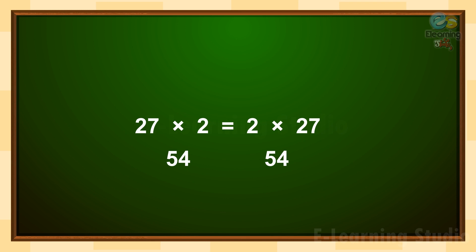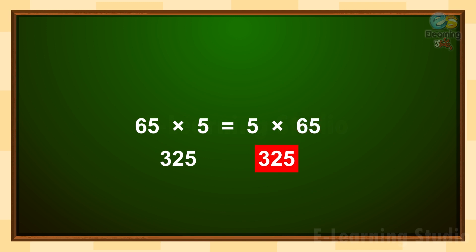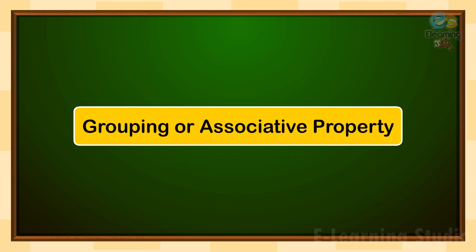In the same way, if we multiply 65 by 5, we get 325. And multiply 5 by 65, it also gives us 325. Both results are the same. Next is grouping or associative property.